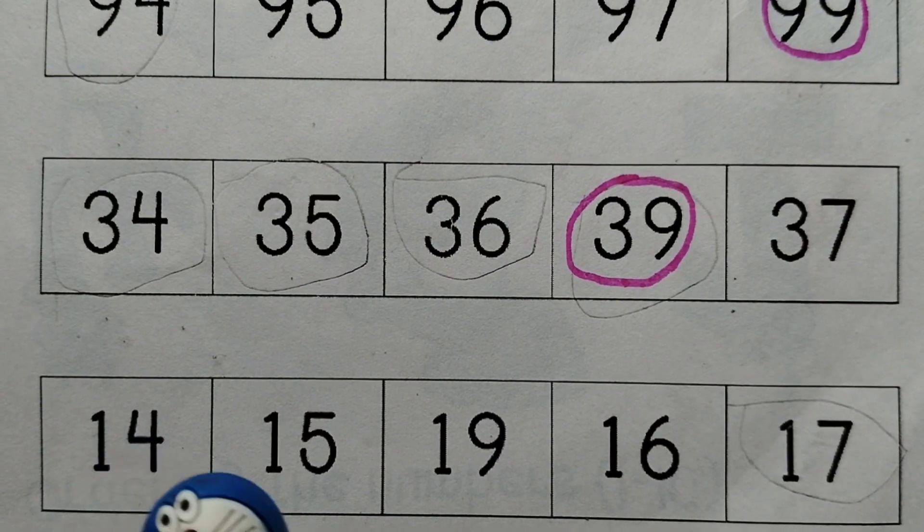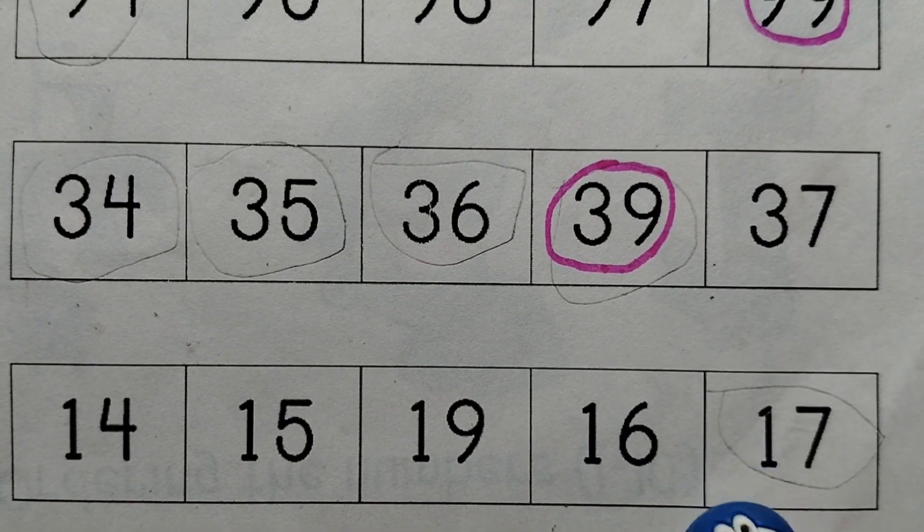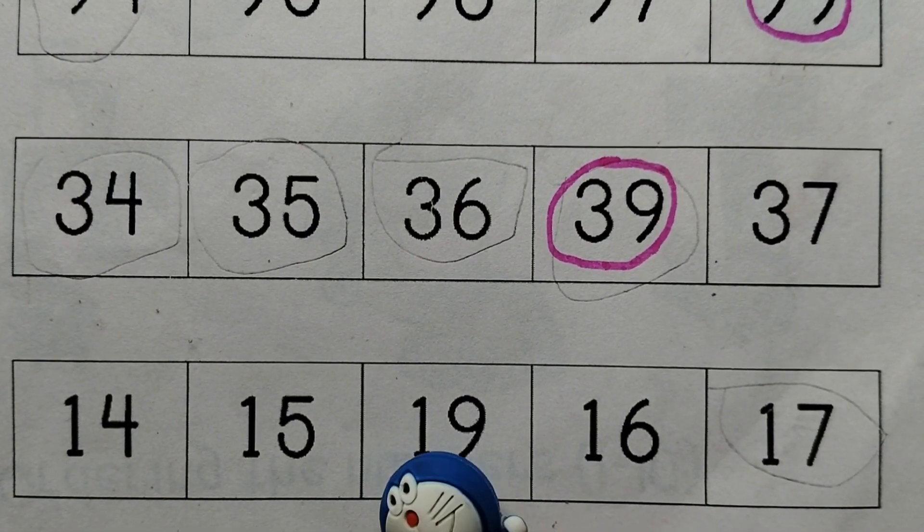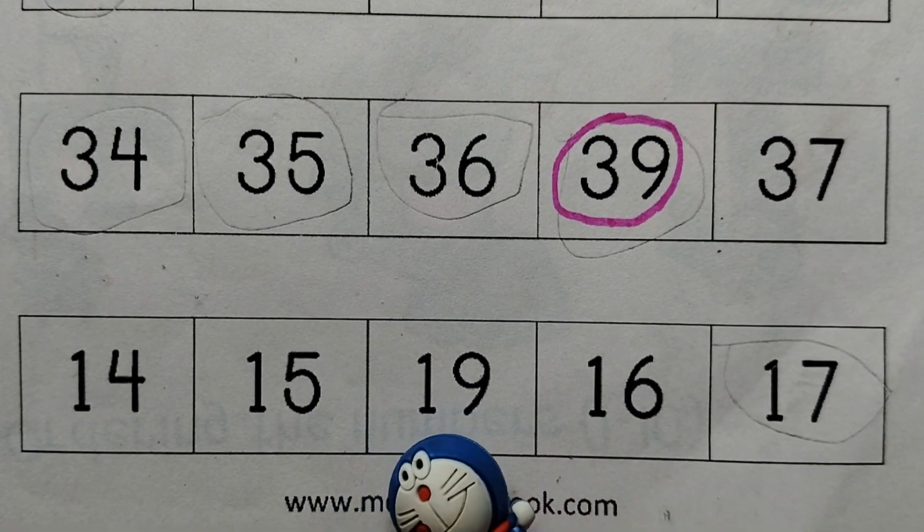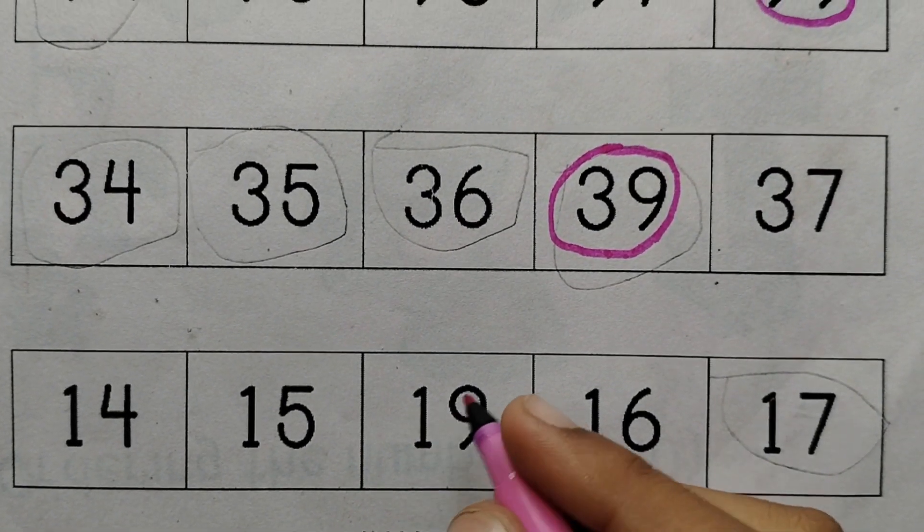14, 15, 19, 16, 17. 19 is the incorrect number in the sequence.